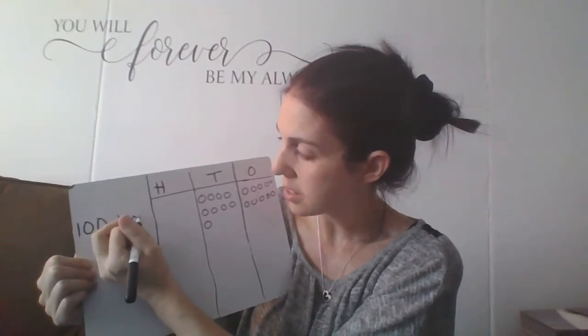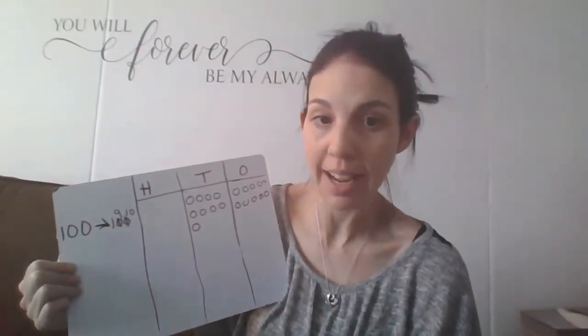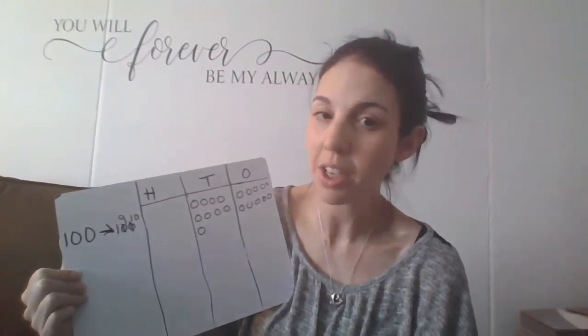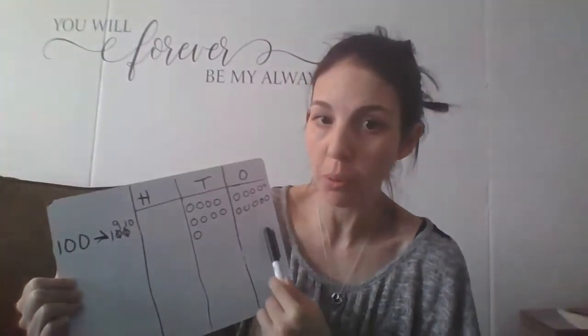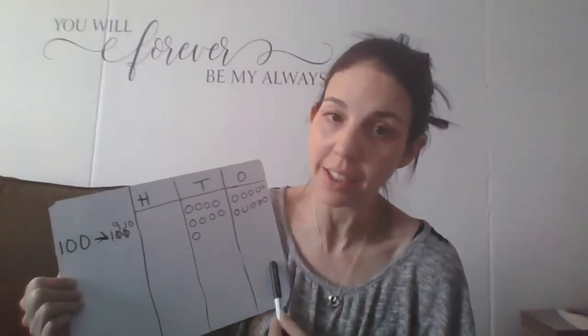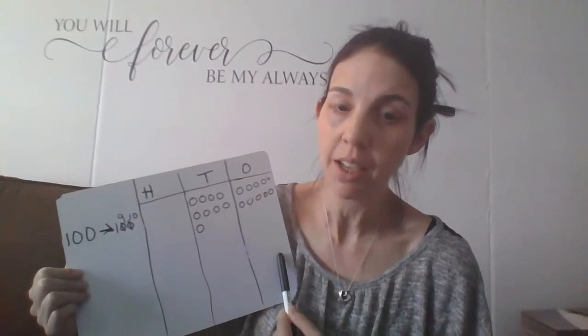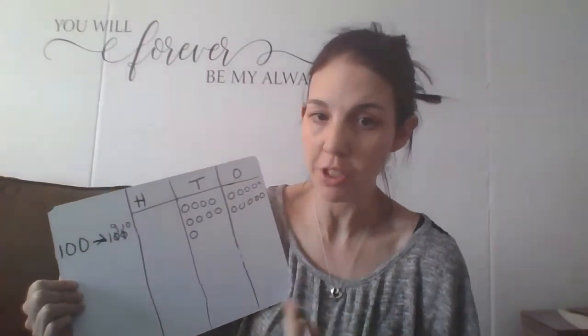I could show it here as 9 tens and 10 ones — that's another way that I can show 100. I could also have all ones and show 100 ones, but that would take a long time and that would not be the best way to show 100.